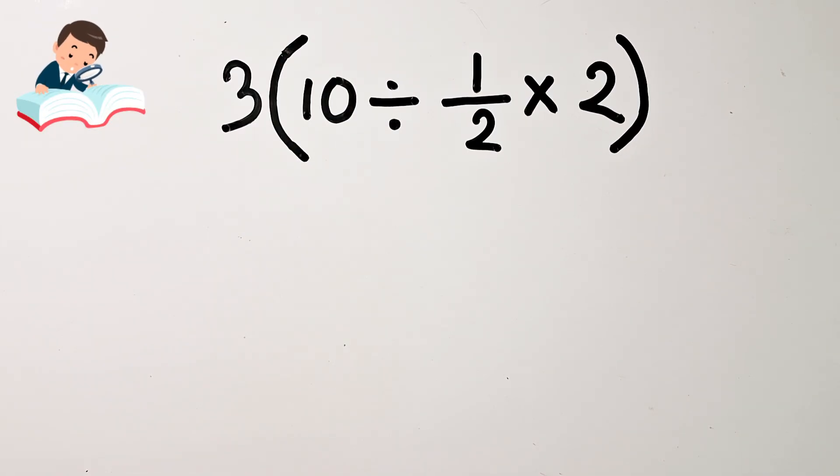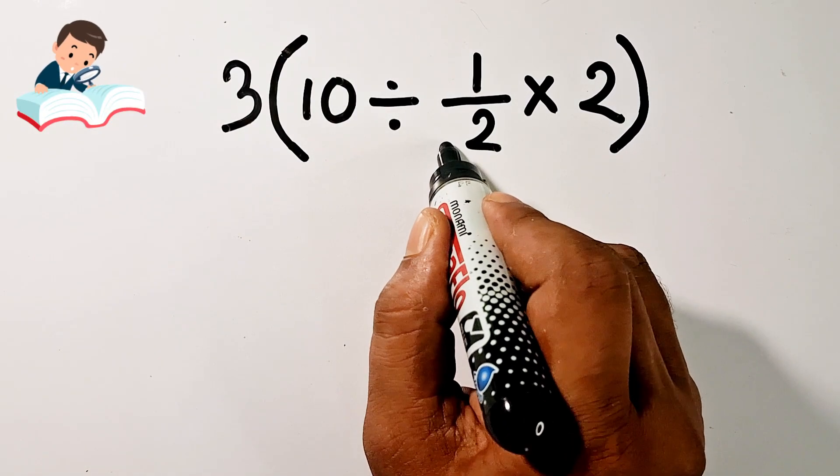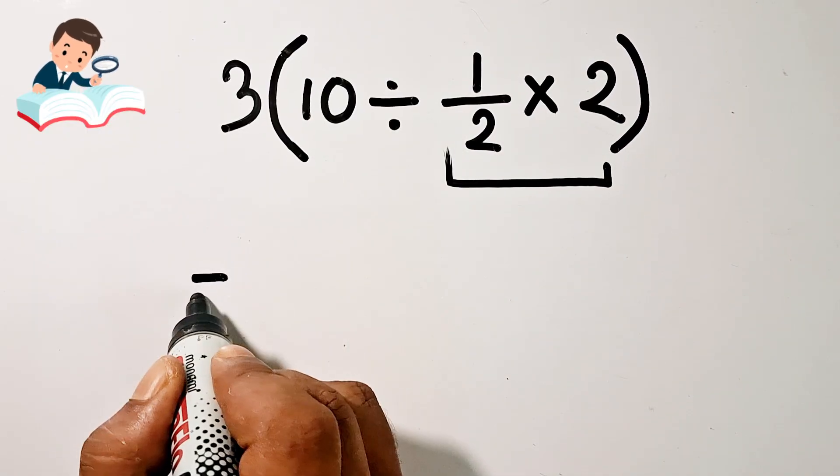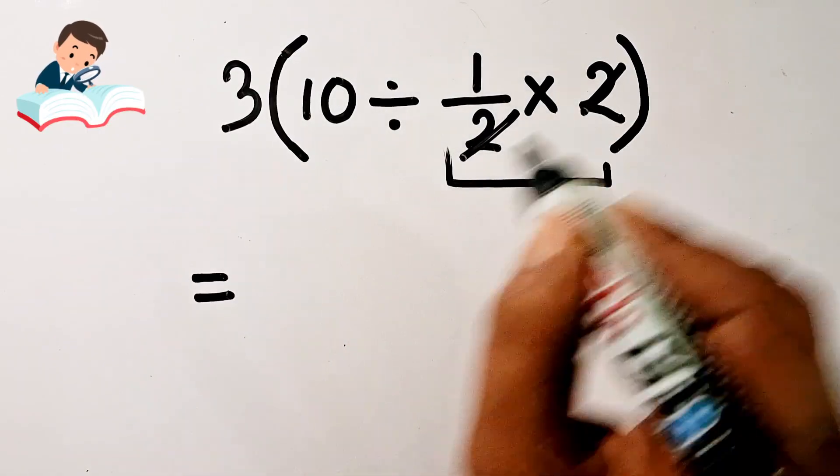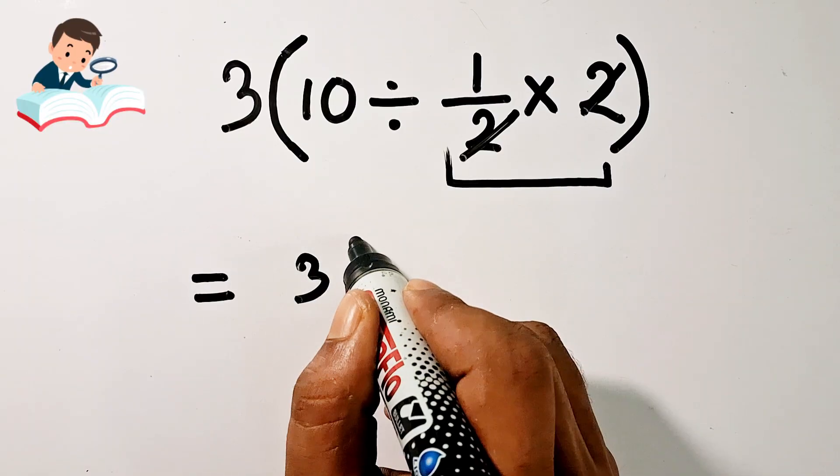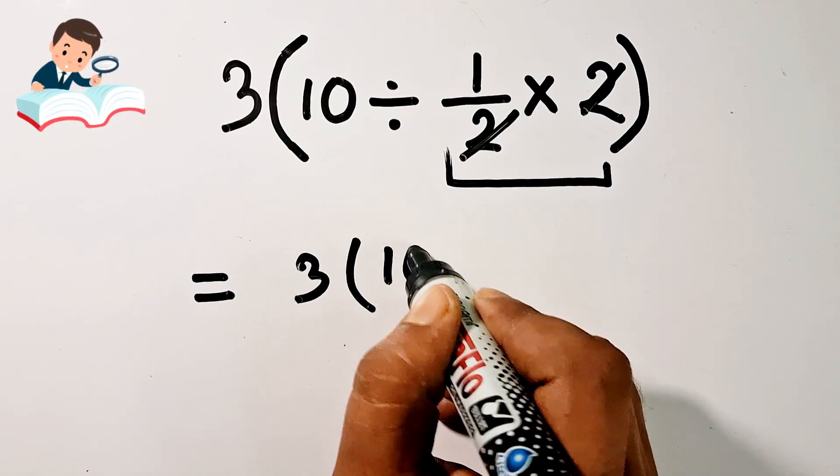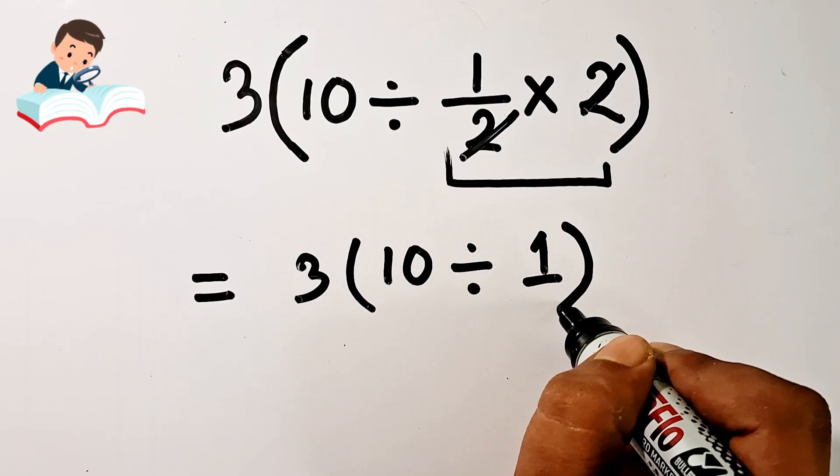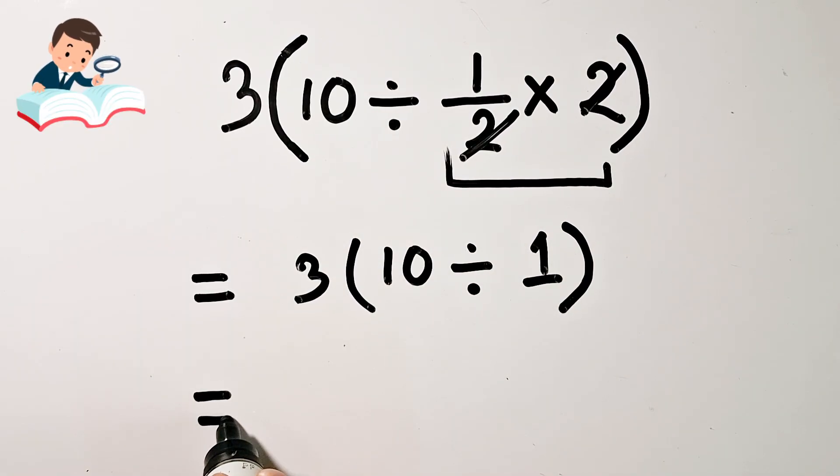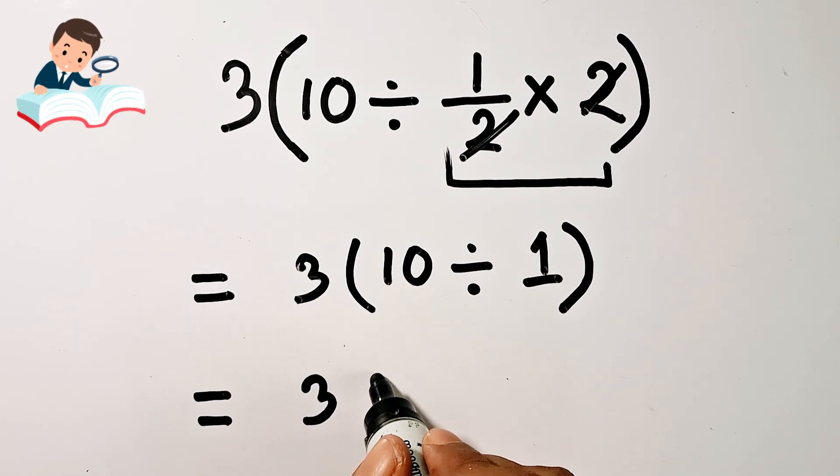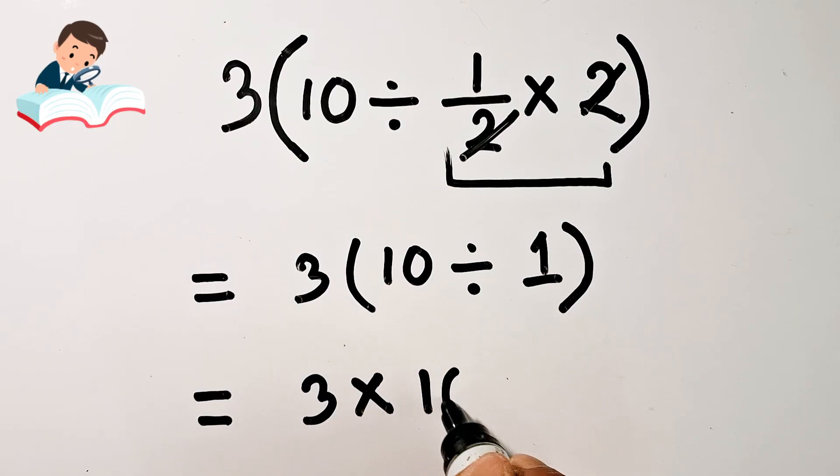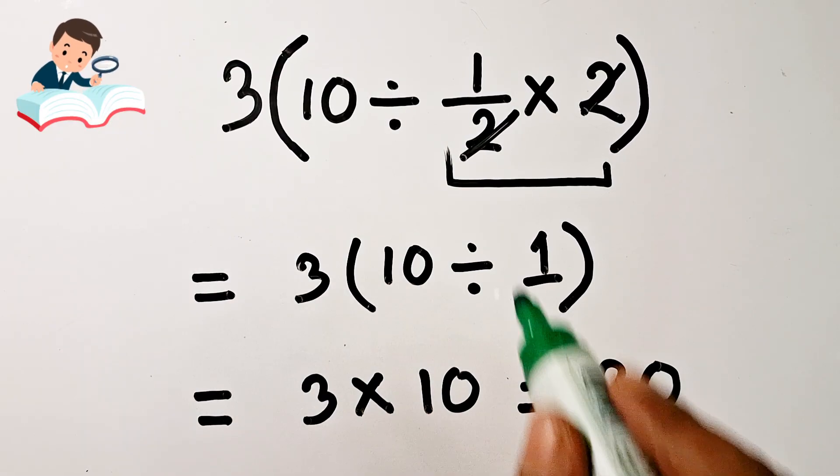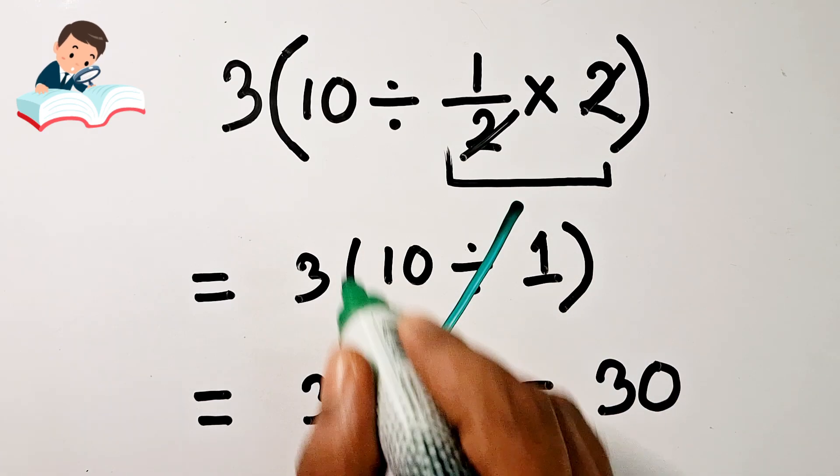Hello guys, we will do another simplification problem according to the PEMDAS rule. First, we will do half times 2 is equal to 1, so 3 times 10 divided by 1. 10 divided by 1 is equal to 10, so 3 times 10 is equal to 30. But it is totally wrong because we didn't follow the PEMDAS rule.